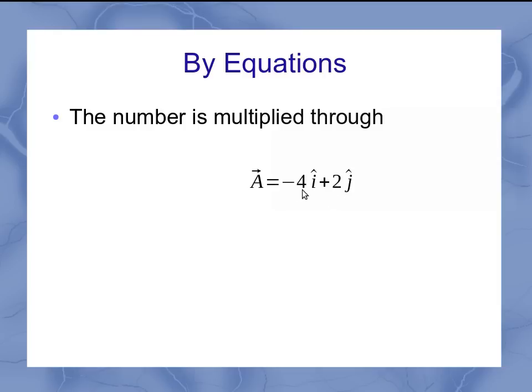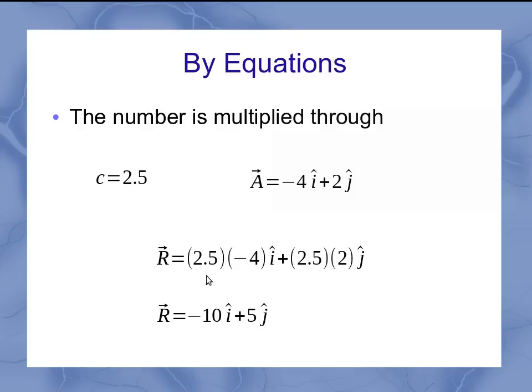And again, your minus 4 is the x component of the vector. Your 2 is your y component of the vector. And let's say that I've got a constant scalar of just 2.5. Well, then when I multiply that through, the 2.5 distributes to the equation so that each one of the terms has the 2.5 multiplied in there. So that would simplify down to minus 10 i hat plus 5 j hat.